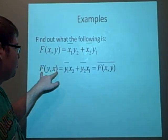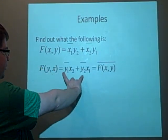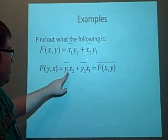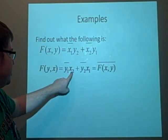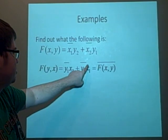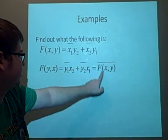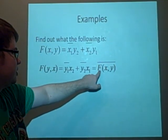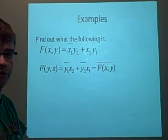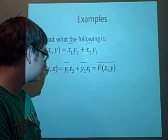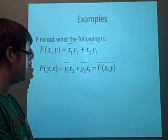So we'll do the f of yx, and that gives us this here, which is the y1 complex conjugate times x2 plus the y2 complex conjugate times x1. And this is actually here, which is the complex conjugate of f of xy. So this one is Hermitian sesquilinear.